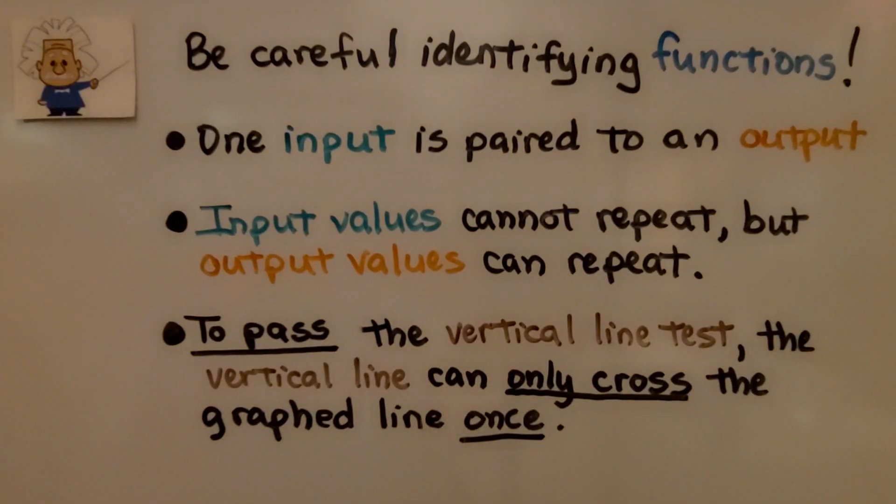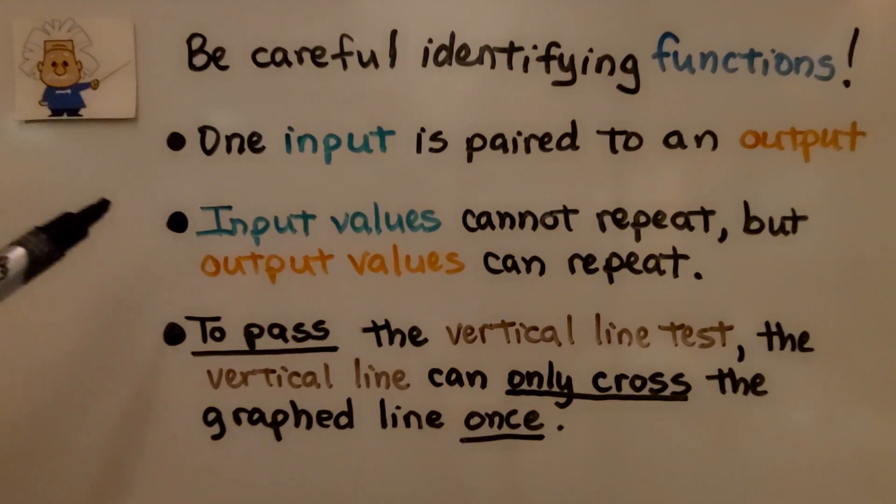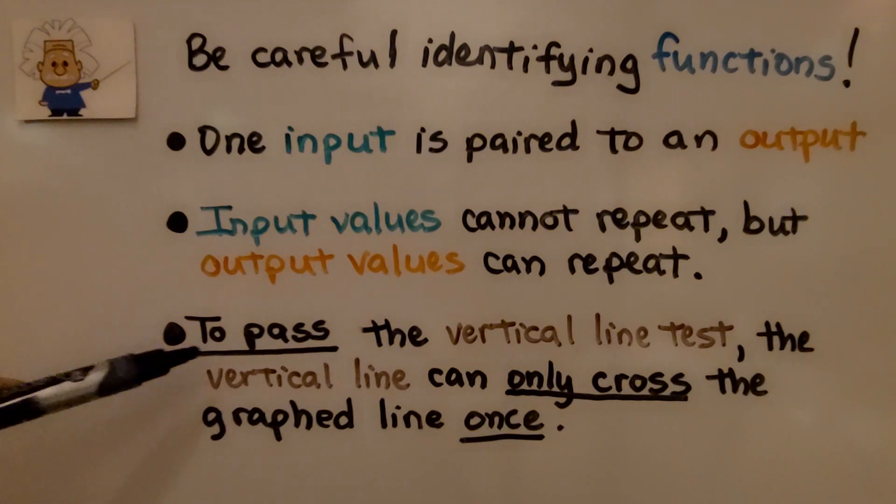Be careful identifying functions. One input is paired to an output. Input values cannot repeat, but output values can. To pass the vertical line test, the vertical line can only cross the graphed line once. We check it in several locations to see if it crosses that line one time.